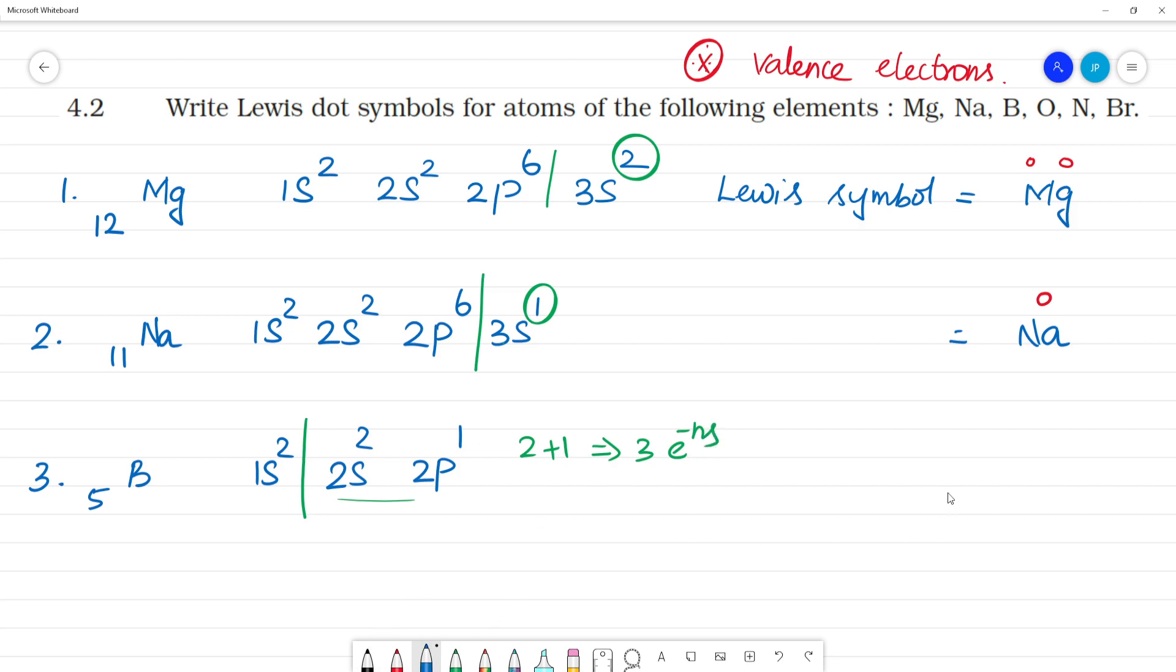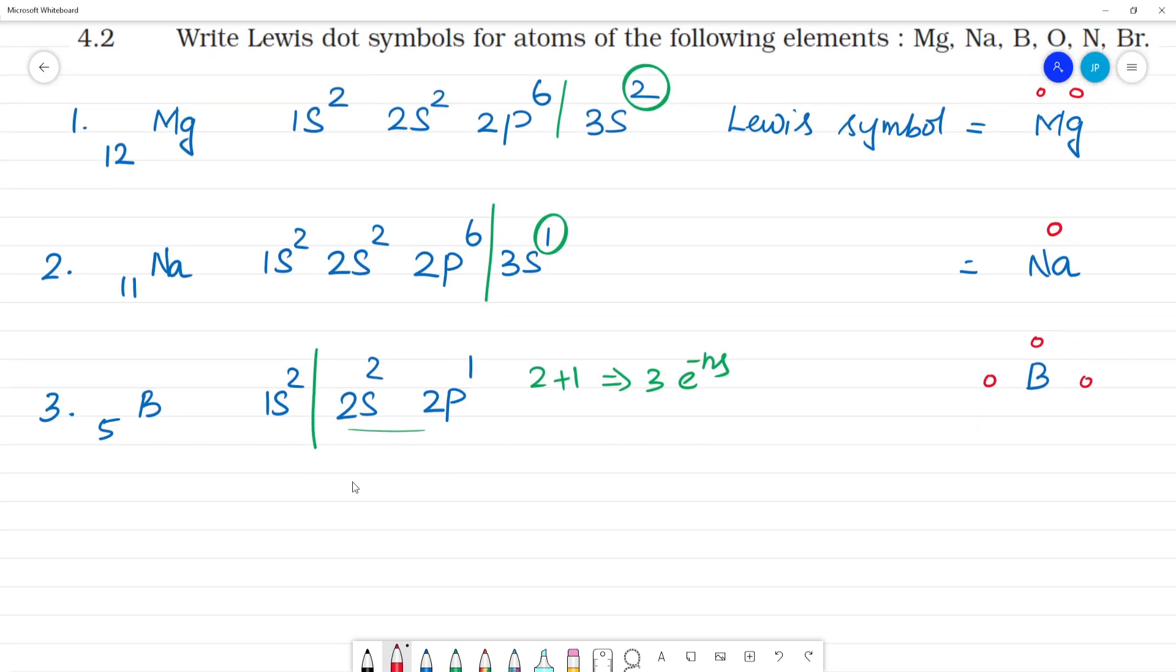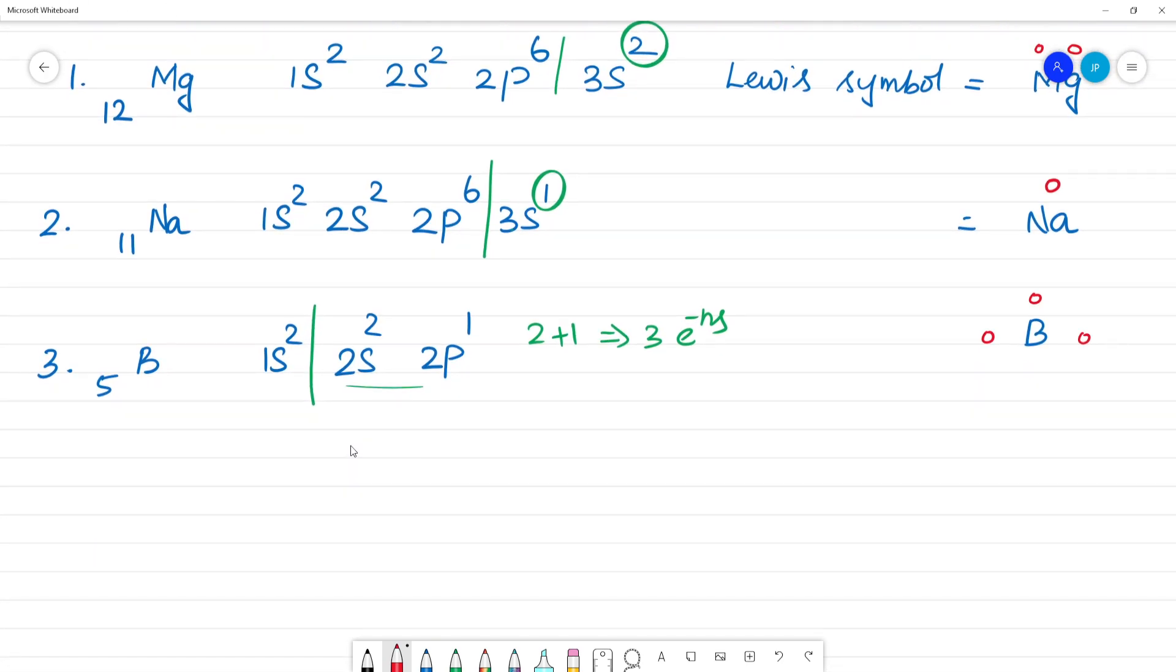If you look at this Lewis symbol, boron has 3 electrons. The electrons are 1, 2, 3. Next, how many electrons are oxygen? Oxygen, nitrogen, and bromine.